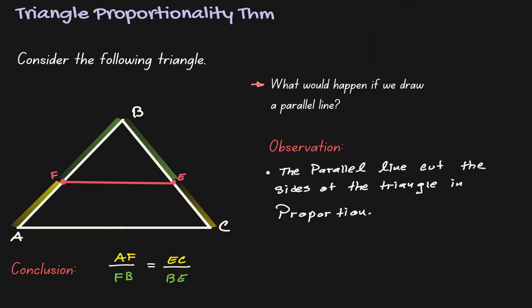And this is what we define as the triangle proportionality theorem. If we introduce a parallel line in a triangle, the sides of those triangles are going to be cut in a proportional way.